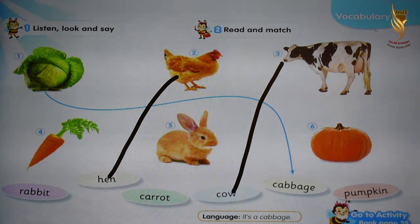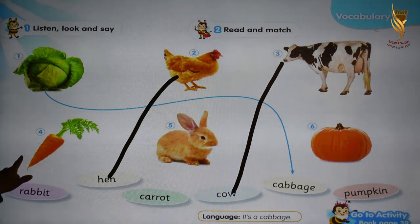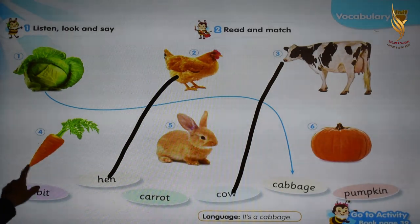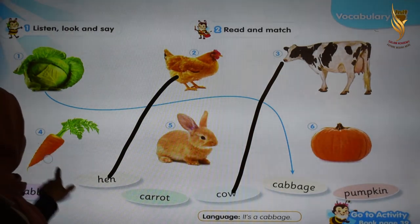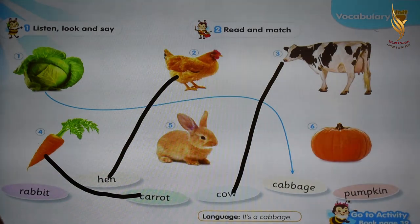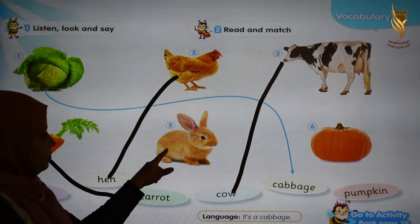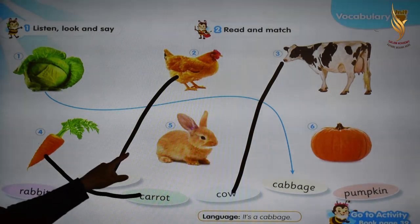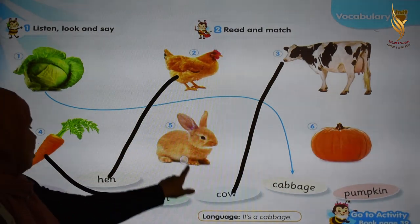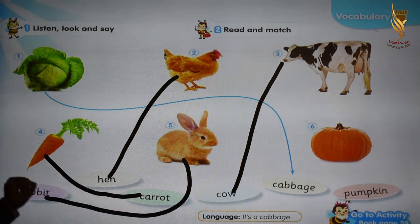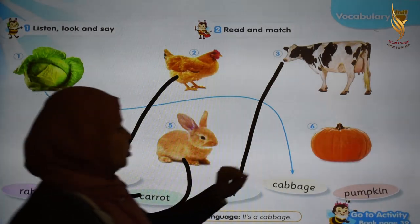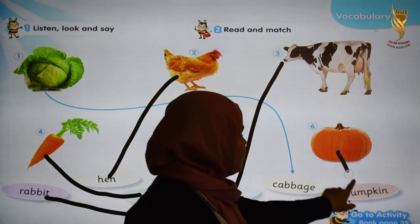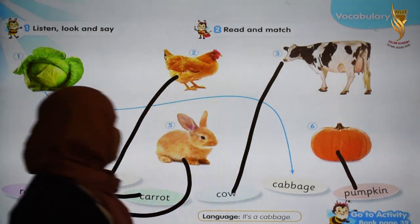What about picture number 4? We have carrot. Very good. Can you see the word carrot? We just found it. Very good. What about picture number 5? What is it? It's a rabbit. Rabbit. Very good. And what about the last picture? Pumpkin. It's very easy — pumpkin. Thank you.